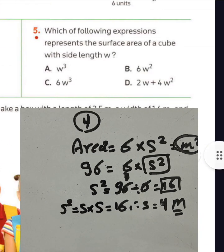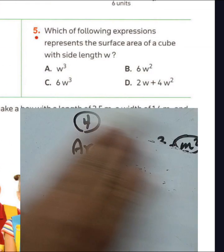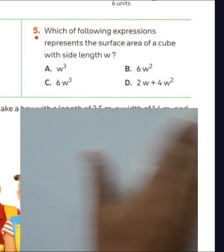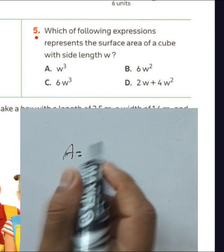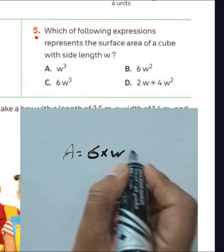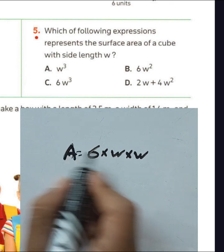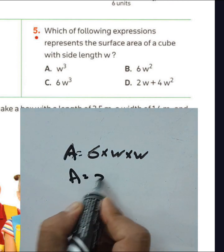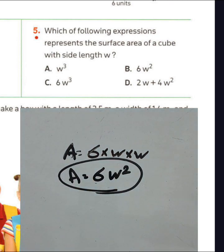Question number five: which of the following expressions represents the surface area of a cube with side length W? We can write surface area equals 6 times W times W, which equals 6W². The surface area of the cube is 6W². Choose letter B for question number five.